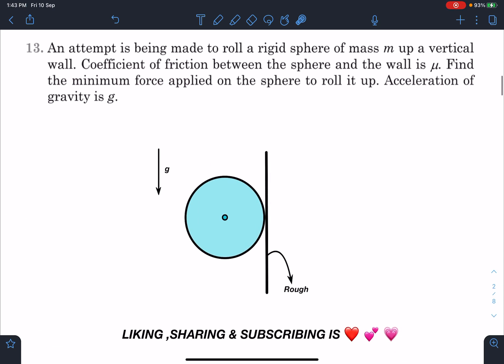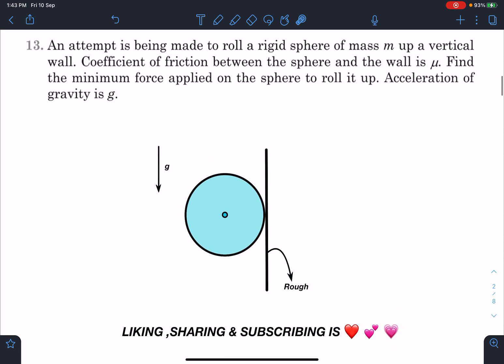Guys, here is the problem statement. An attempt is being made to roll a rigid sphere of mass M up a vertical wall. Coefficient of friction between the sphere and the wall is mu. Find the minimum force applied on the sphere to roll it up. Acceleration due to gravity is g.